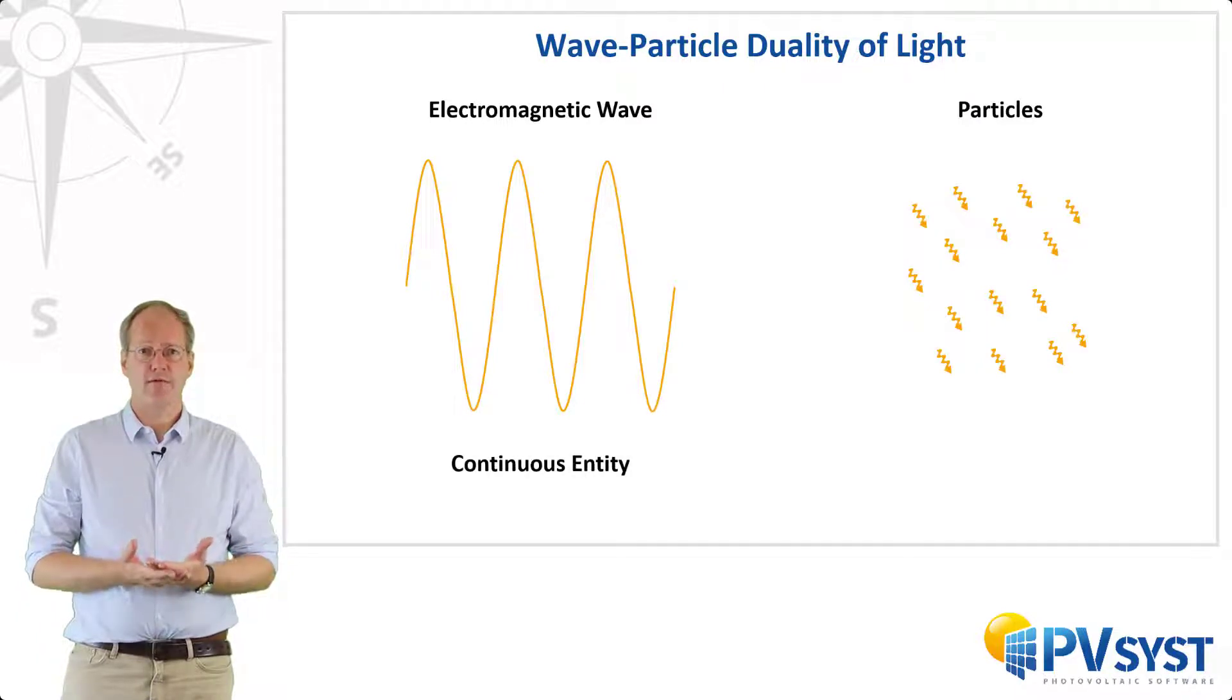When we consider light as a wave, we consider it as a continuous entity. On the other hand, if we consider light as a flux of particles, we call those particles photons. You can think of photons as tiny little packets of light that flow out from any source. We are going to go through a couple of ways that we can use the properties of waves and particles to describe light.